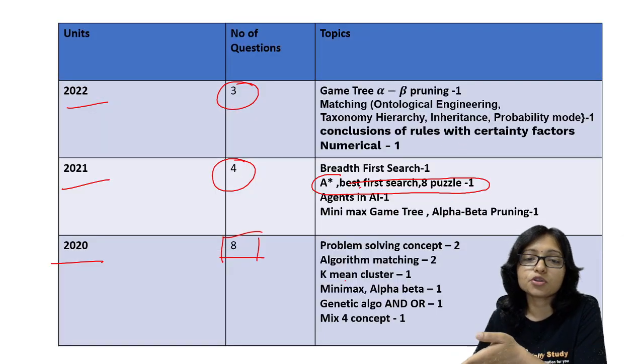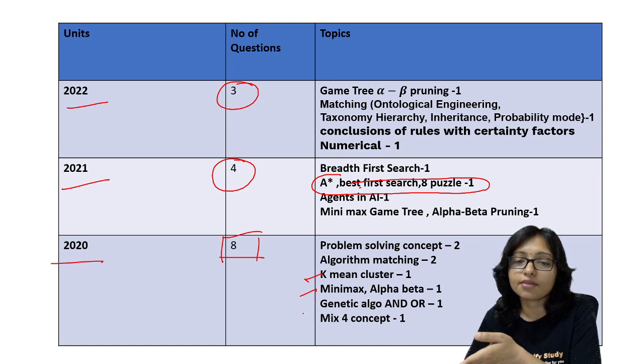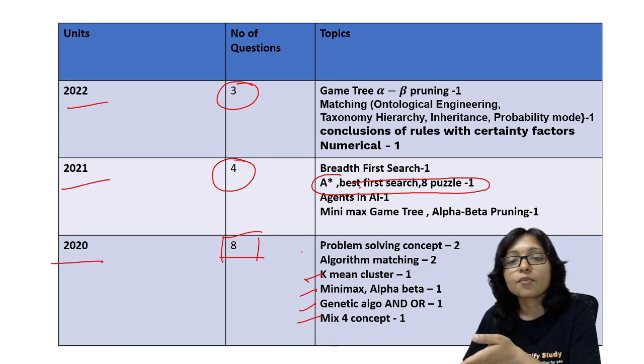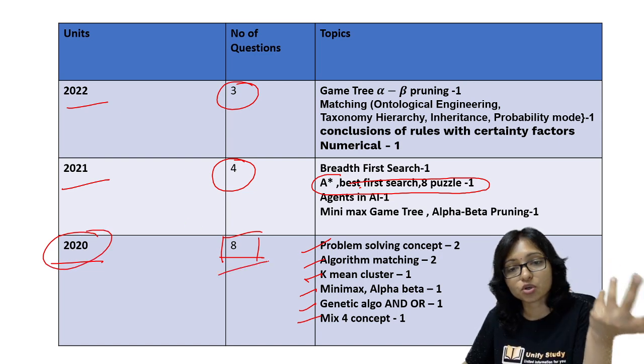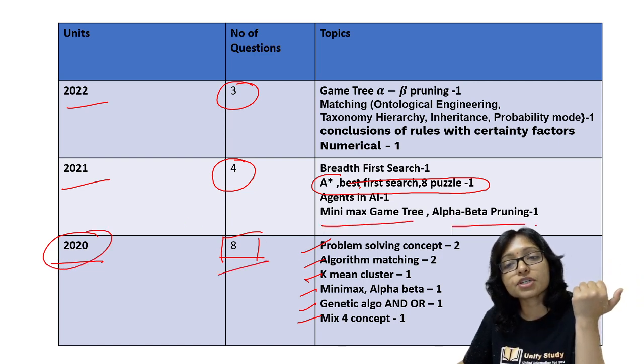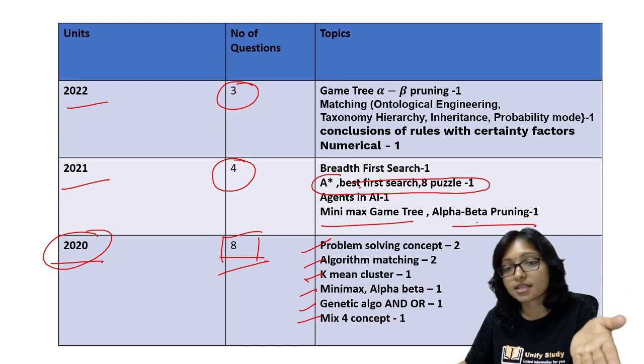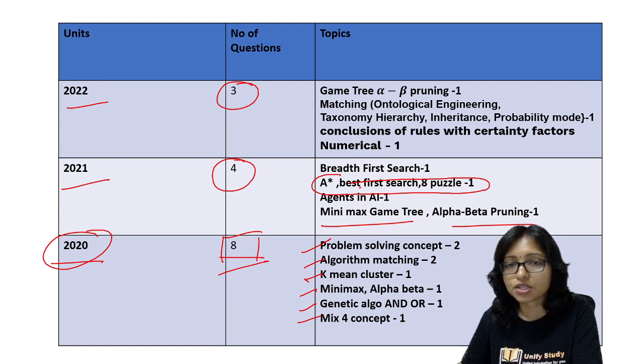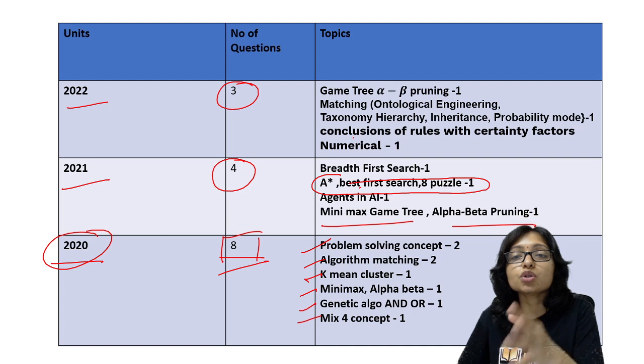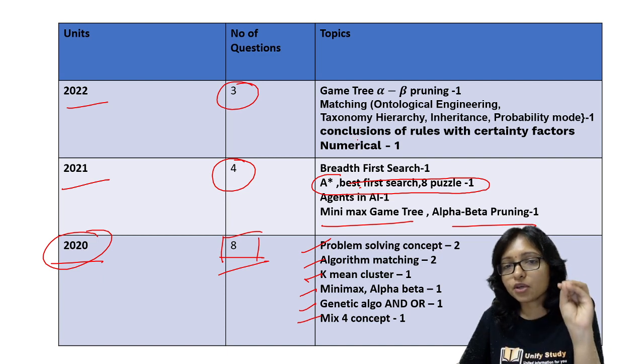...it came in clustering, alpha-beta, genetic algorithm, problem solving and matching. So 2020 also they asked more questions, that was also the same area. Game tree always they are asking questions: minimax game tree, alpha-beta pruning, and different types of constraint satisfaction problems like 8-puzzle game and other constraint satisfaction problems are there. So this is the area where you need to focus.